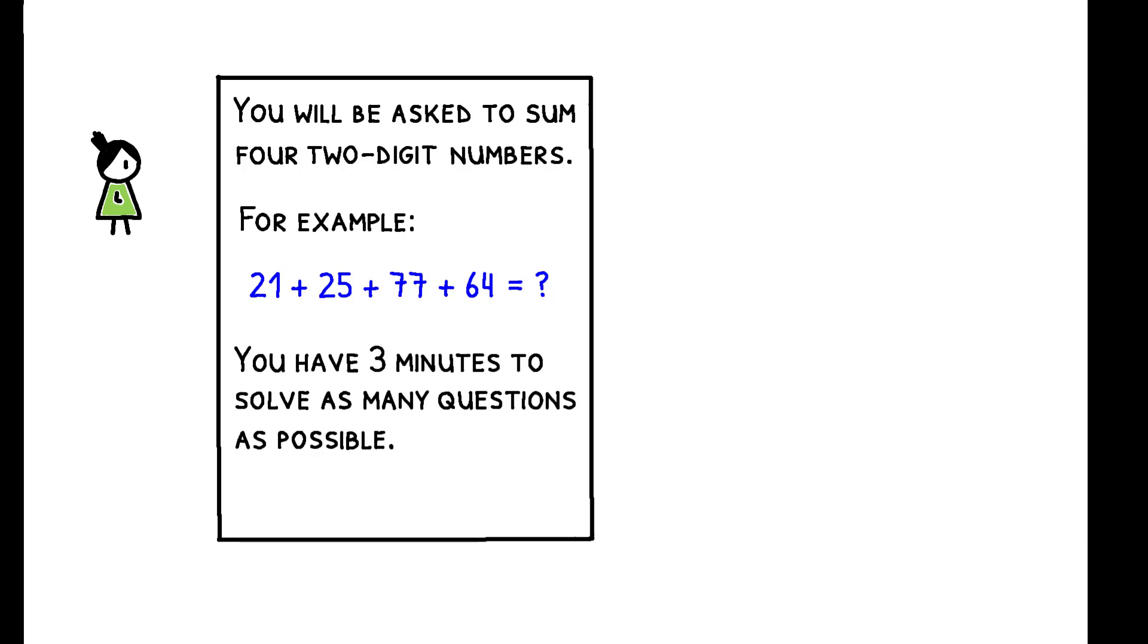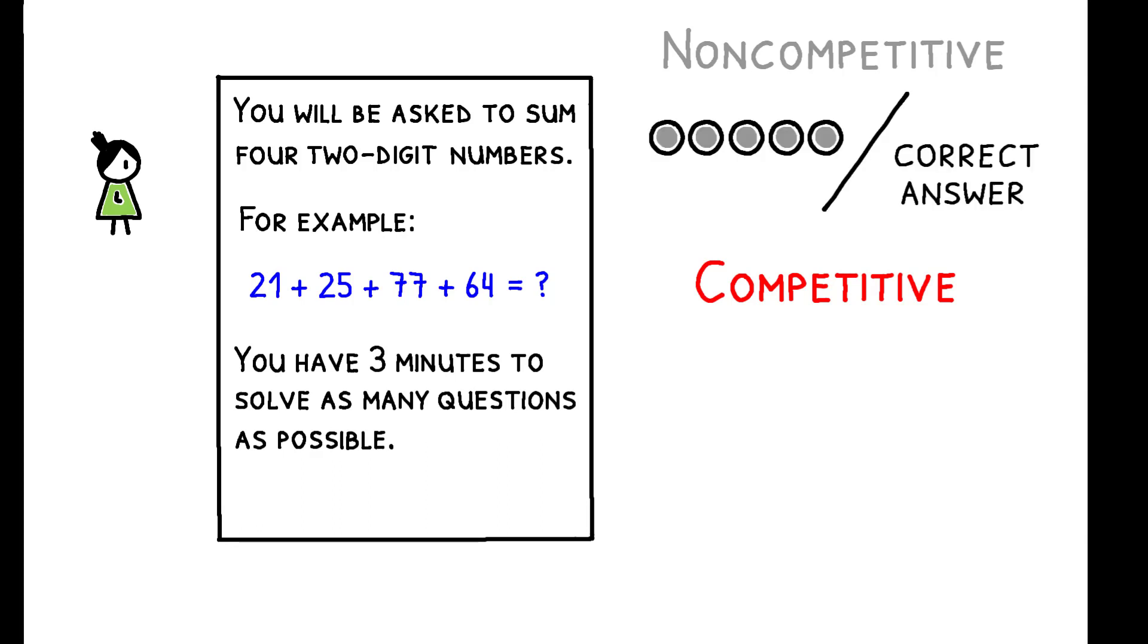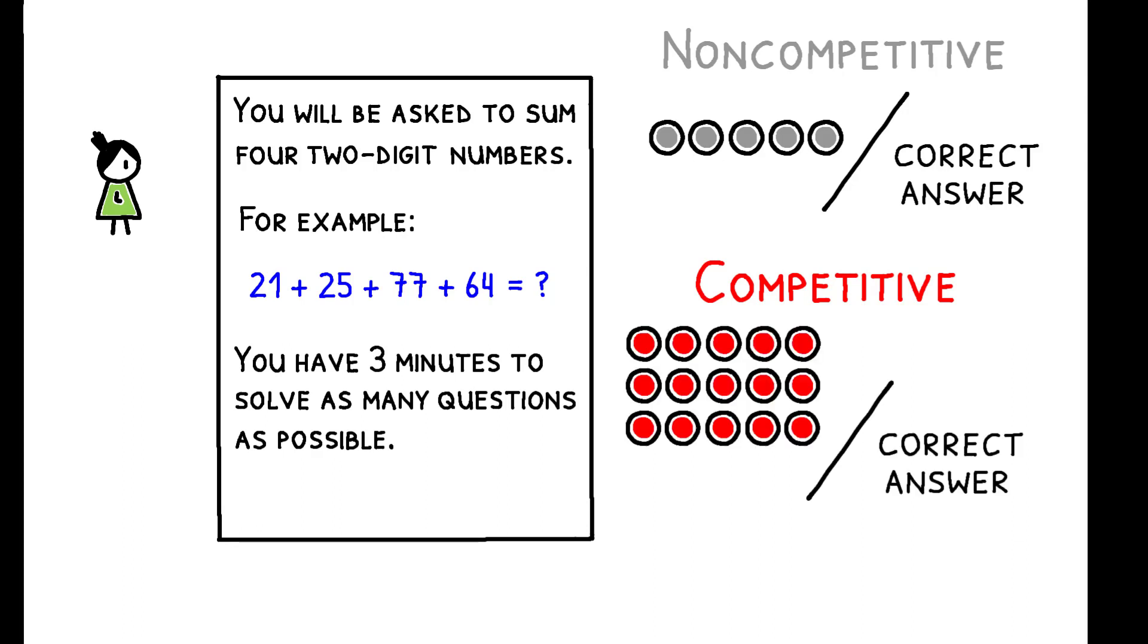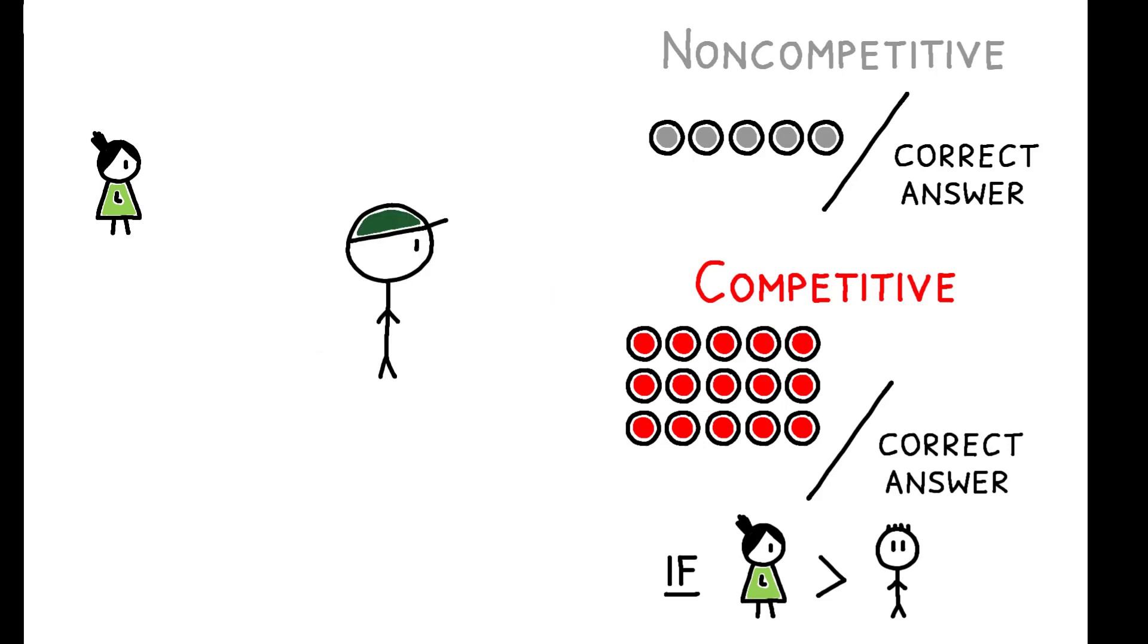a numerical exercise that could be performed under a non-competitive or competitive incentive scheme. Either they received 5 Norwegian kroner per correct answer, or they received 15 kroner per correct answer, but only if they outperformed a randomly selected opponent from another school. Crucially, parents were asked to choose the incentive scheme for their child.